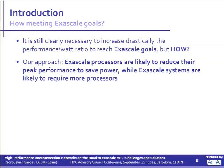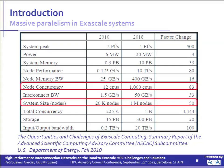What is the approach we think is more likely to be right to reach this goal? We think that Exascale processors are likely to reduce peak performance in order to save more power. But in that case, we will have Exascale systems consisting of many more processors. Indeed, if we come back to the table, we can see that the expected system size in nodes is in the order of one million nodes. The node-level concurrency — the number of cores per node — is in the order of one thousand cores.